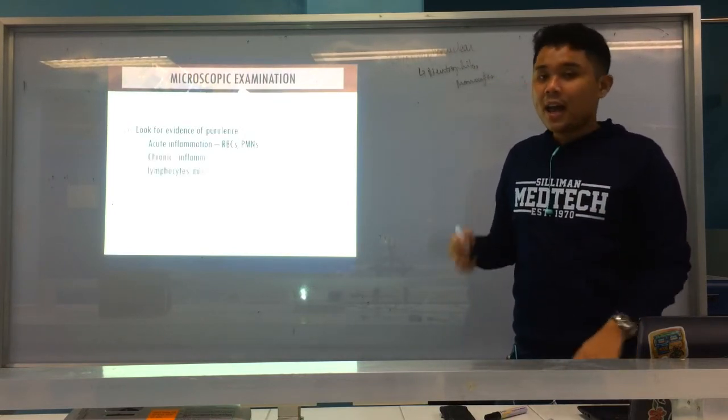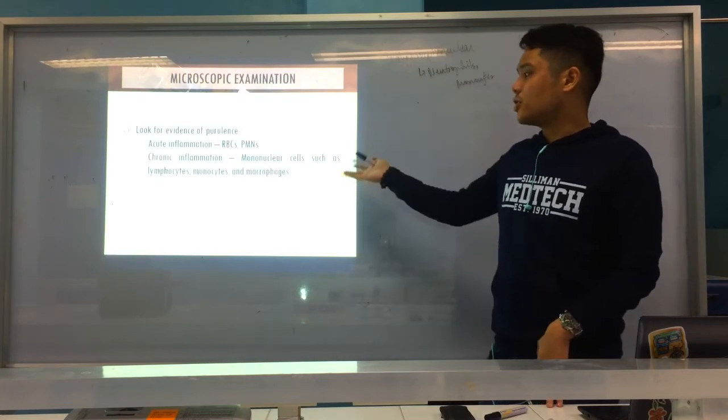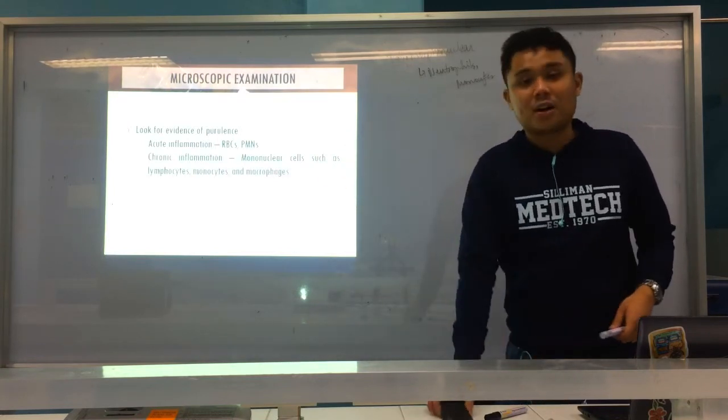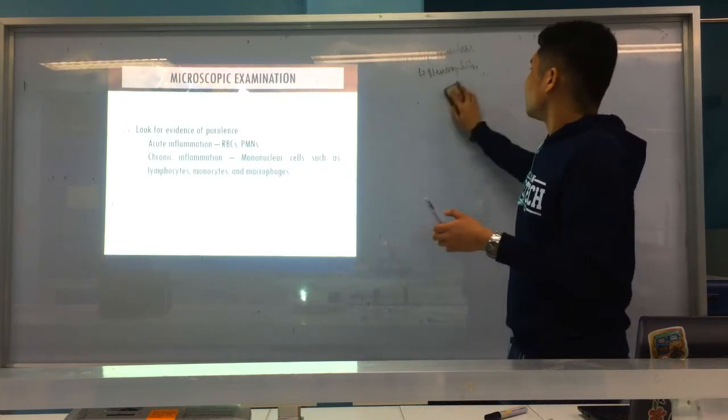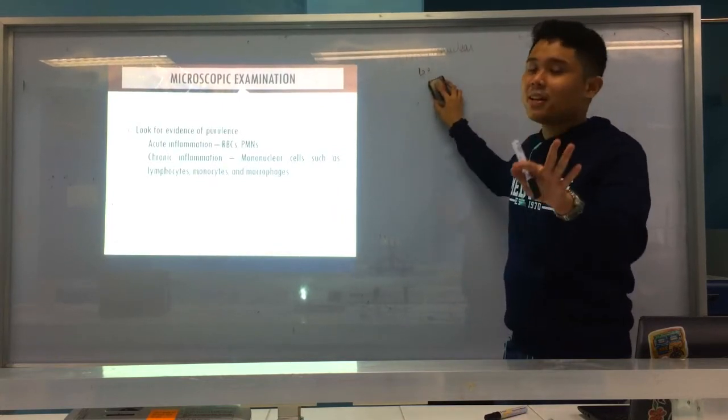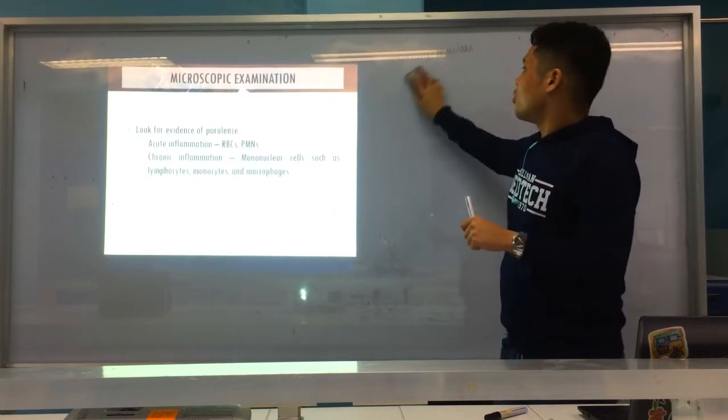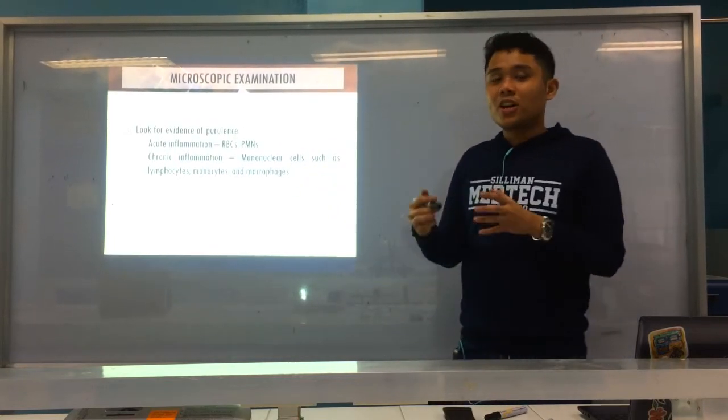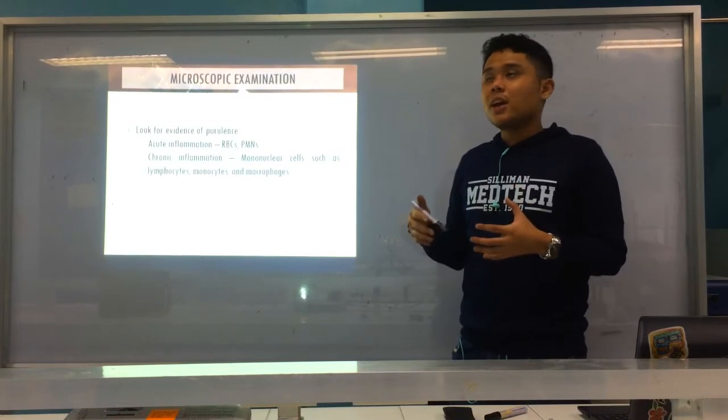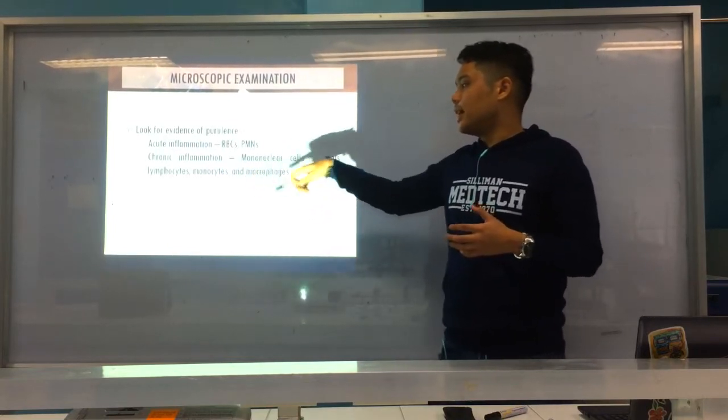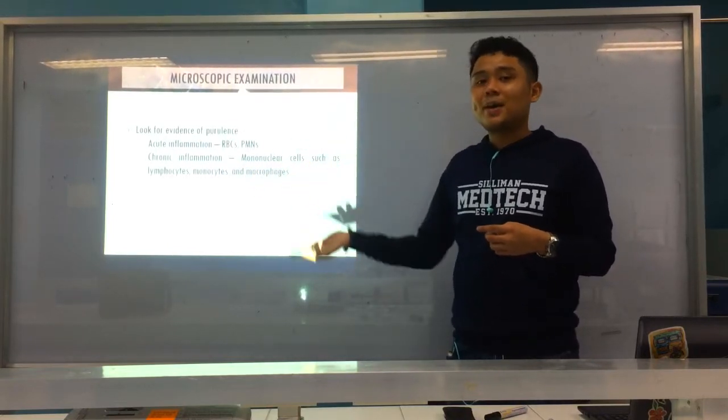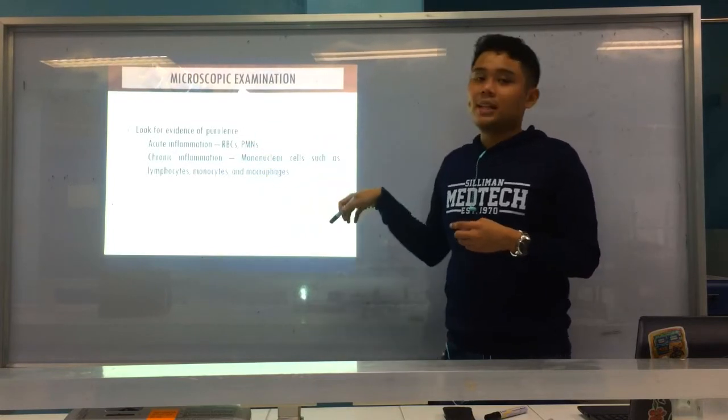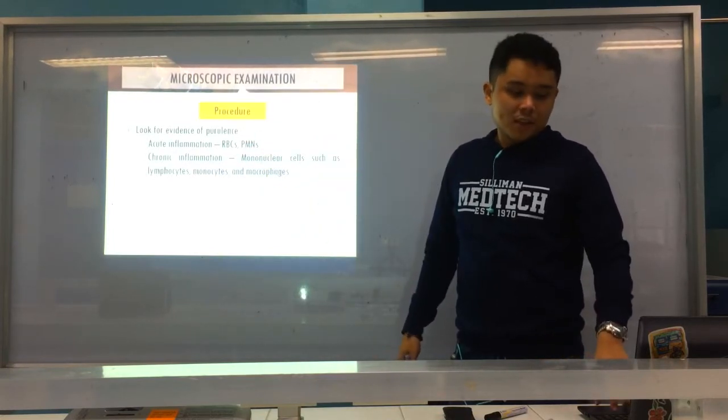Polymorphonuclear, PMNs. Usually these are your neutrophils or monocytes. Acute inflammation, meaning ongoing inflammation. And you have chronic mononuclear, such as lymphocytes, monocytes, and macrophages. It's chronic because usually neutrophils are indicative of acute inflammation. And for monocyte lymphocytes, chronic. Usually the cells for long-term immunity are lymphocytes, monocytes and macrophages.